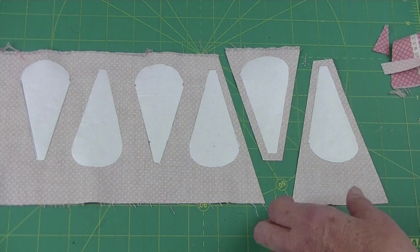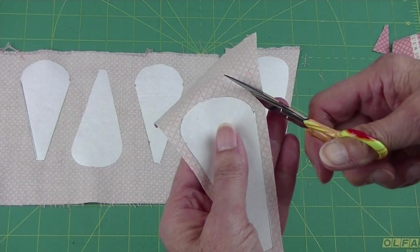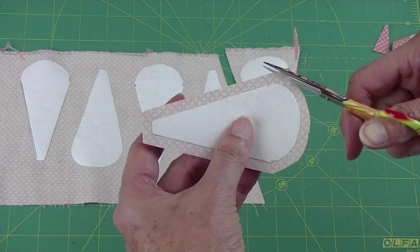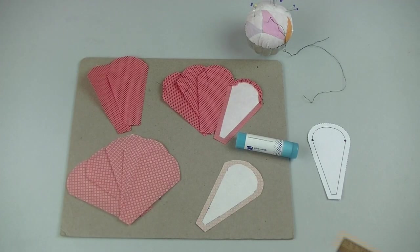On this rounded edge, eyeball about a quarter of an inch seam and cut around the edge. Now you'll want to turn those curved edges to the back of the paper.